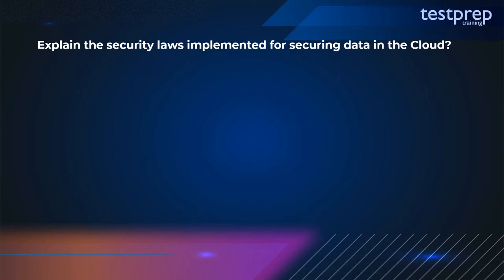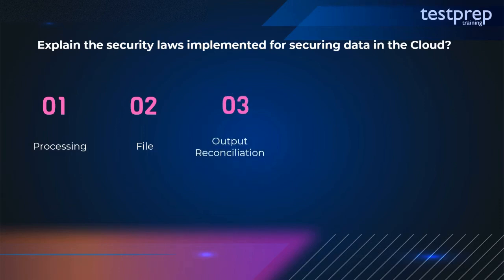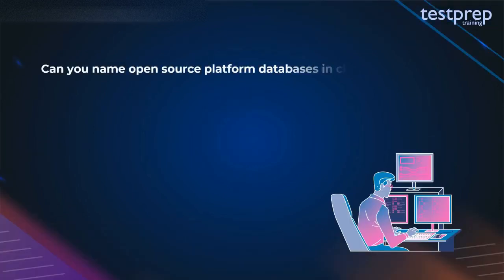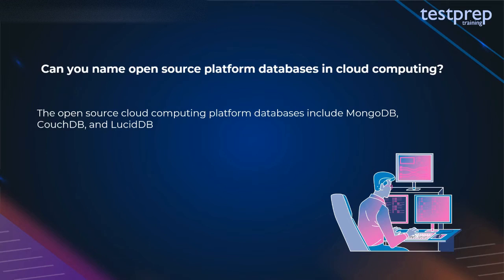Question 13: Explain the security laws implemented for securing data in the cloud. First, processing — controls data being processed correctly in an application. Second, file — manages and controls data being manipulated in files. Third, output reconciliation — controls data reconciled from input to output. Fourth, input validation — controls the input data. Fifth, security and backup — controls security breach logs. Question 14: Open source cloud computing platform databases include MongoDB, CouchDB, and LucidDB.